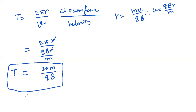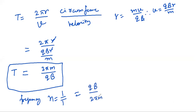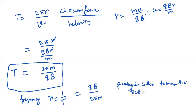Frequency N is equal to 1/T, so this becomes N = QB/2πM. This particle entered perpendicular to the magnetic field, and you got circular motion.